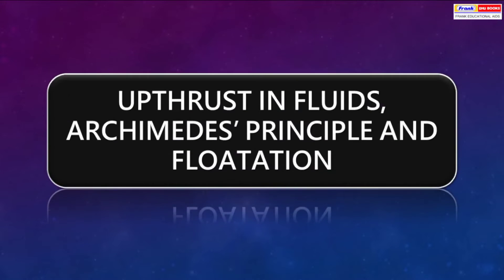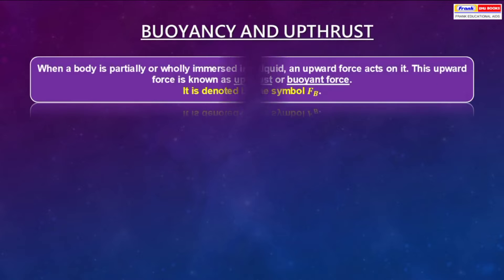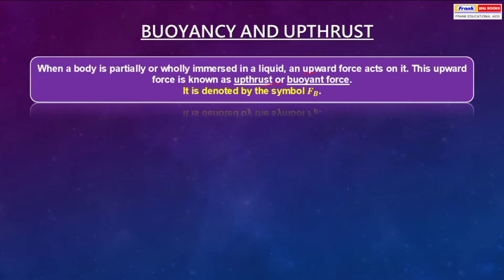In this chapter we are going to talk about upthrust in fluids, Archimedes' principle and the concept of flotation. It started with the concept of buoyancy and upthrust. When a body is partially or wholly immersed in a liquid, an upward force acts on it. This upward force is known as upthrust or buoyant force, denoted by the symbol Fb. Whether any object sinks or floats on or inside water is basically dependent upon this concept of upthrust or buoyant force.